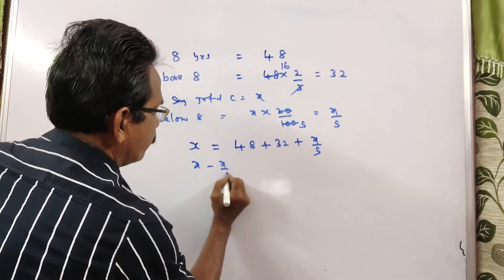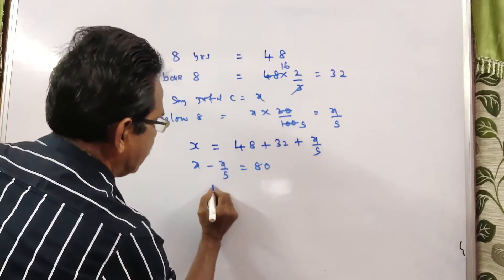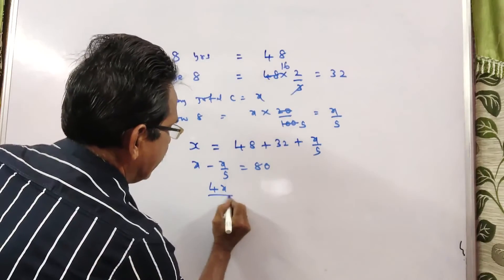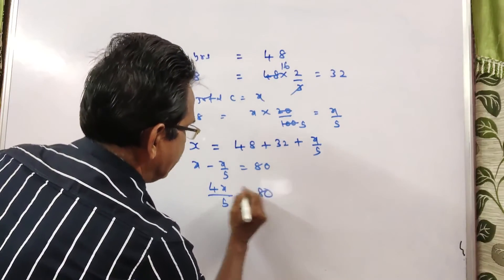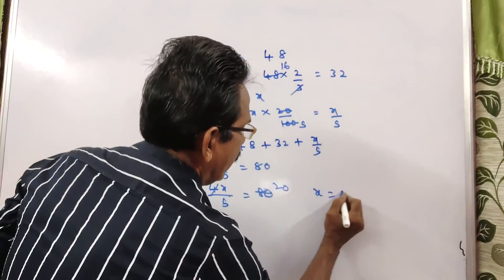So x minus x/5, x minus x/5 is equal to... x minus x is 4x/5 is equal to 80. 20, 25, so 100.